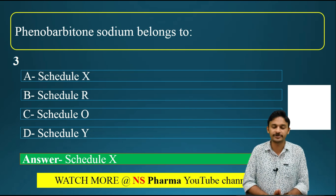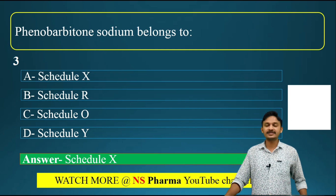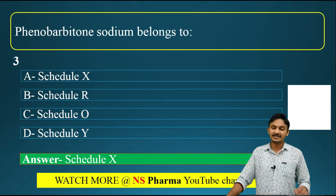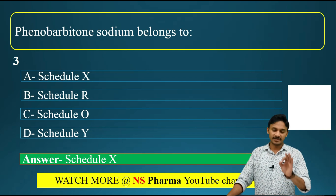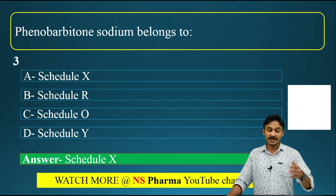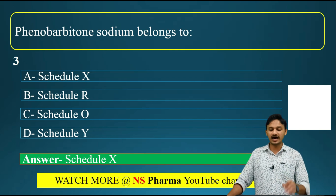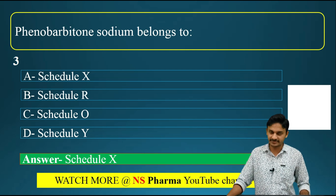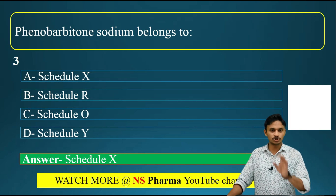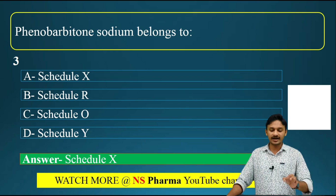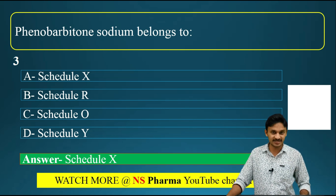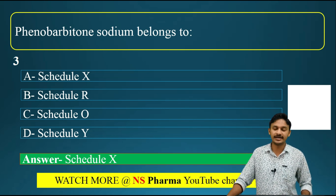Examples of Schedule X drugs include phenobarbitone, barbiturates such as pentobarbitol and secobarbital, CNS stimulants like amphetamine and methamphetamine, and hypnotics like glutethimide. Schedule R is the standard for mechanical contraceptives. Schedule O is standards for disinfectant fluid. Schedule Y is related to clinical trials.